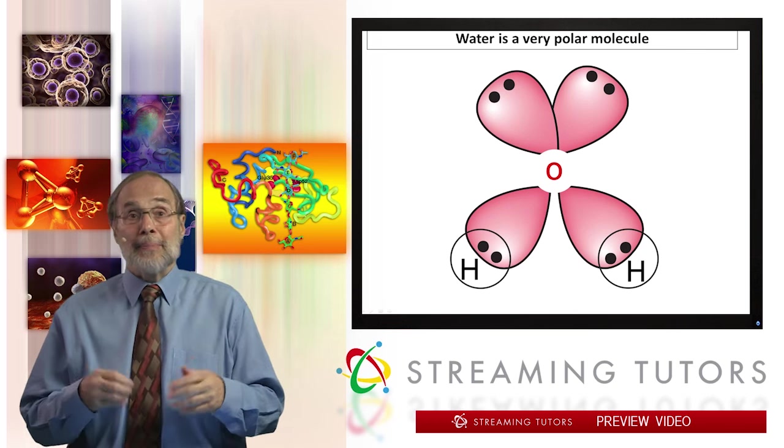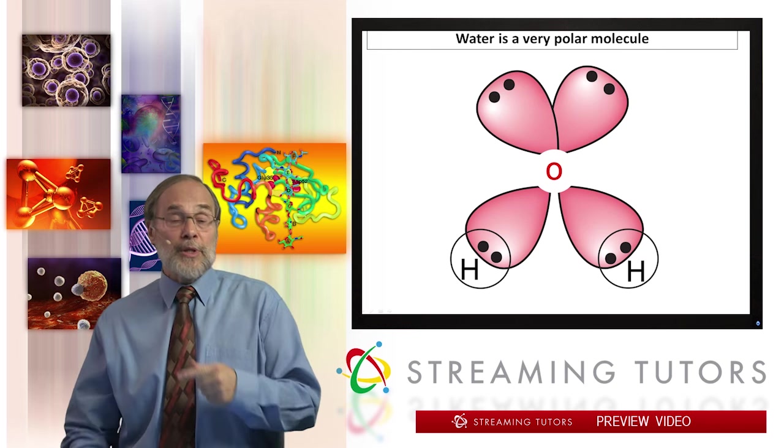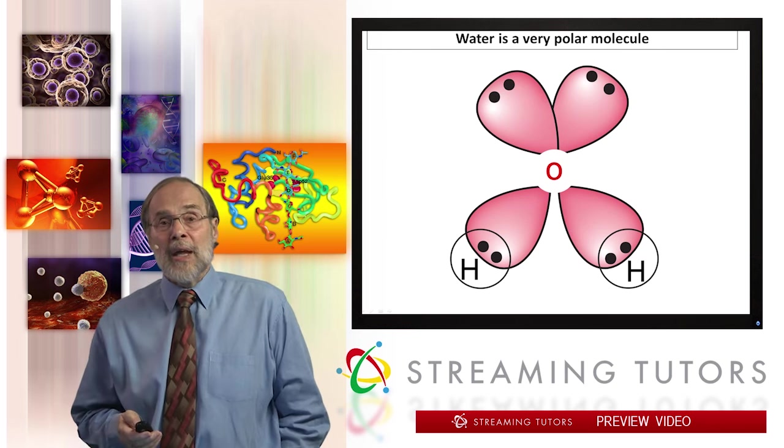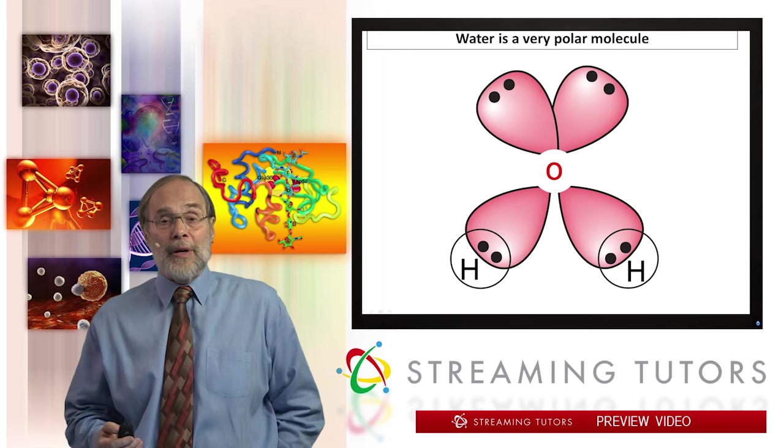This is diagrammed here at the bottom. And then they have two unbonded electron pairs diagrammed at the top here. Let's go through that.